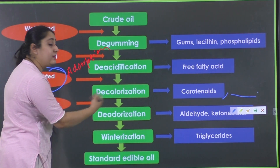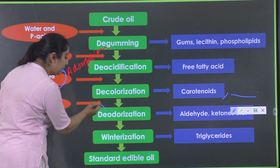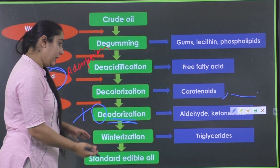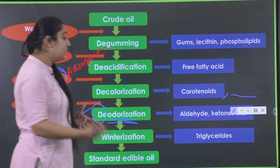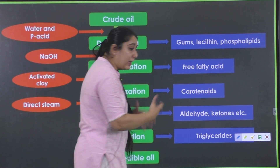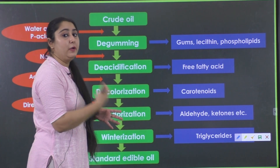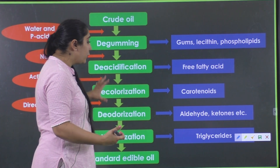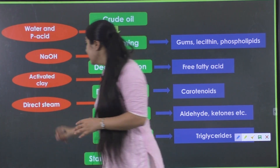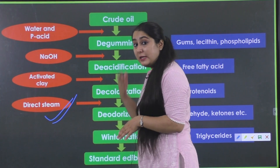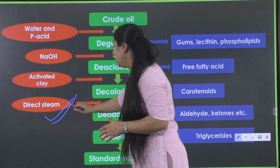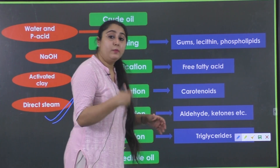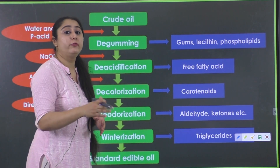Next we have deodorization. As the name tells, it involves removal of odor-giving compounds present in the oil. The oil may contain certain aldehydes, ketones, and small hydrocarbons which may be giving it a bad or undesirable odor. To remove them, direct steam at high temperature is passed, and eventually all of these compounds are vaporized and removed from the oil.